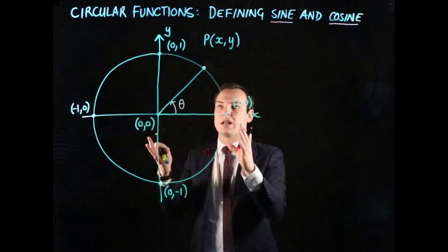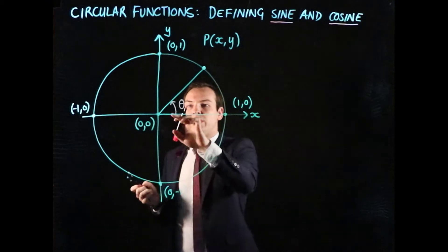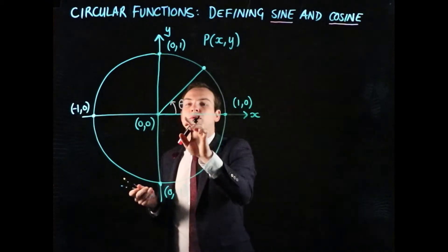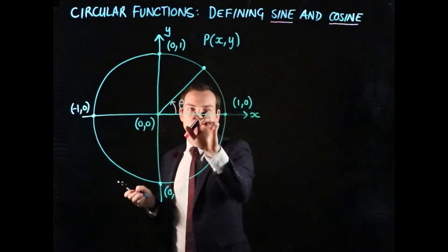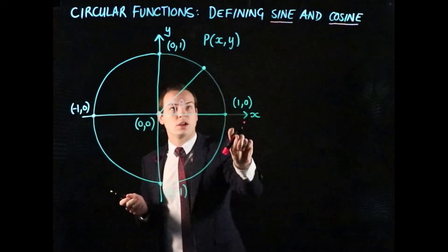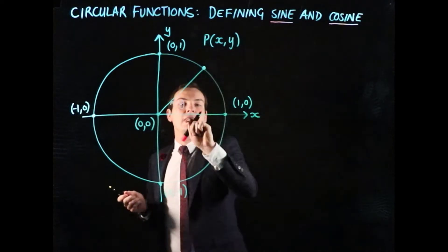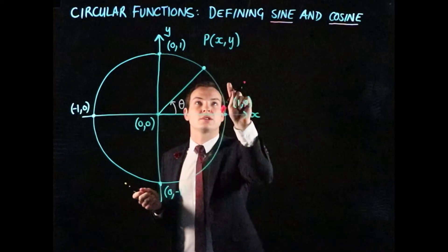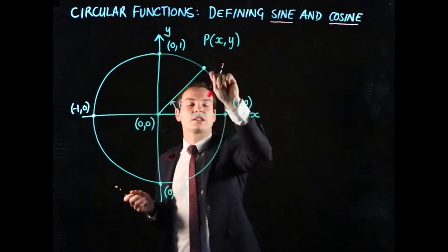We had our circle with radius 1 centered at the origin, we created another radius here, which made an angle with the positive x-axis and that radius, and that point here where it intersected the unit circle was going to be called P. The really important thing here was that we were interested in what the values of x and y were.